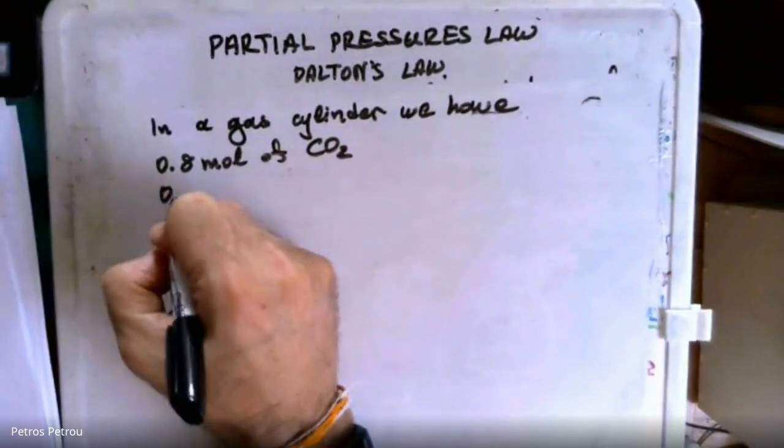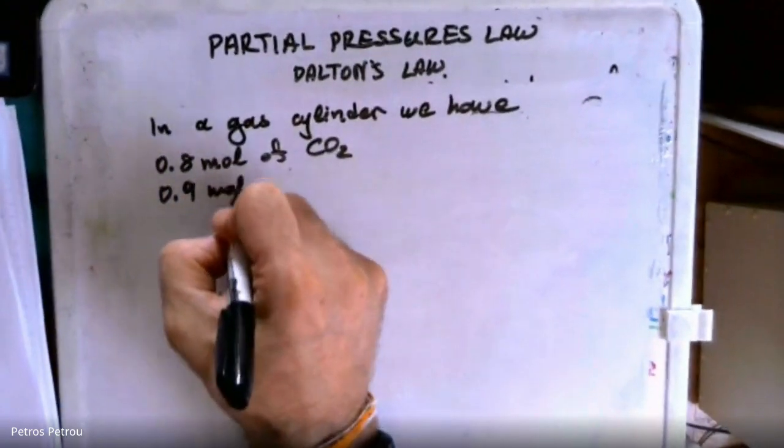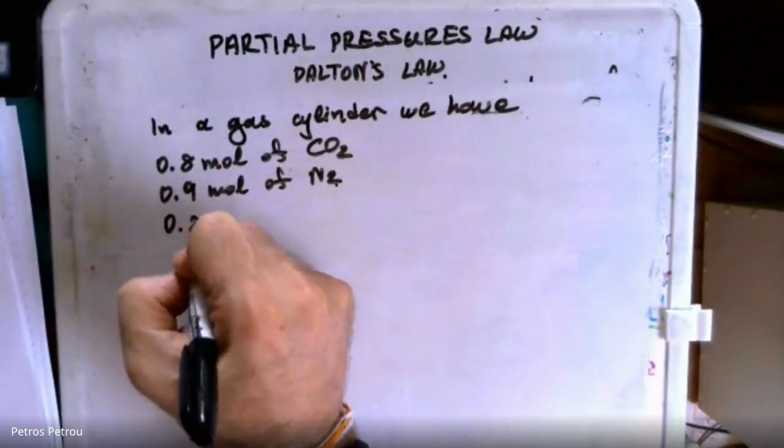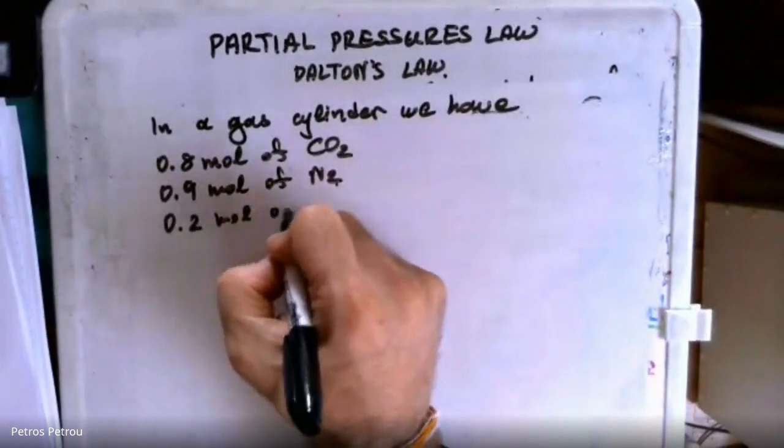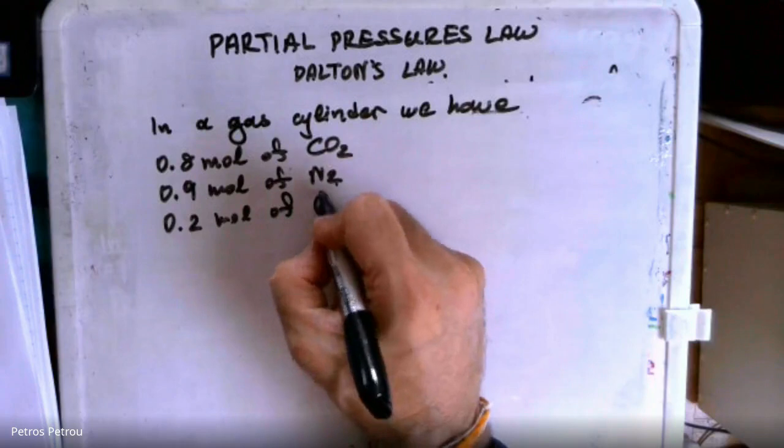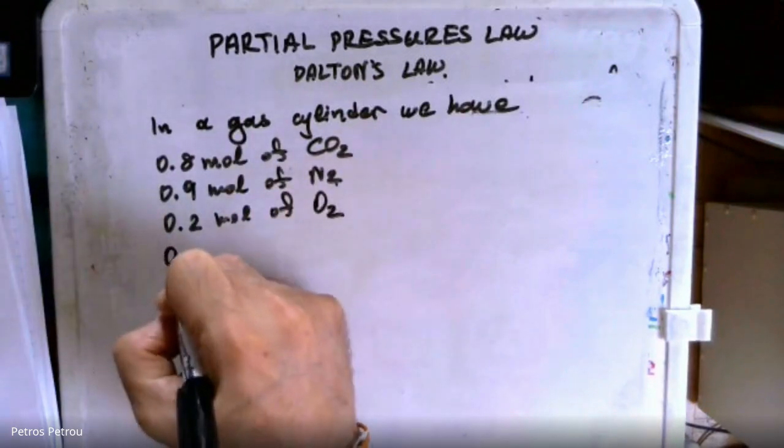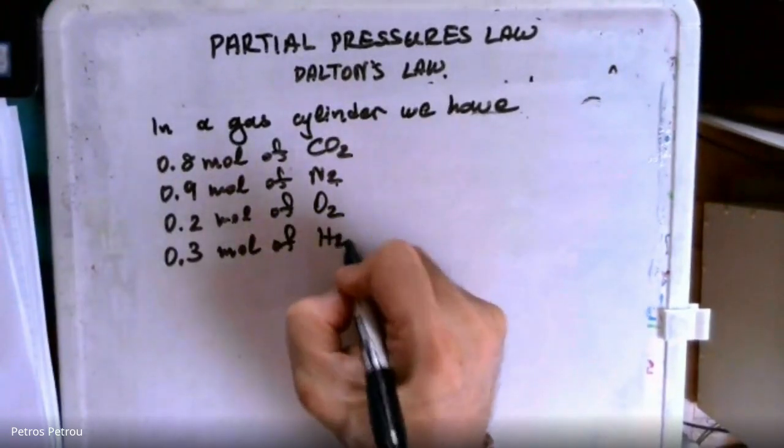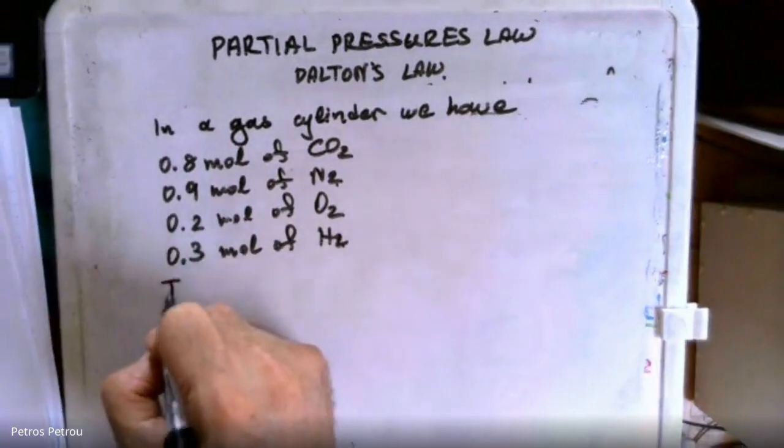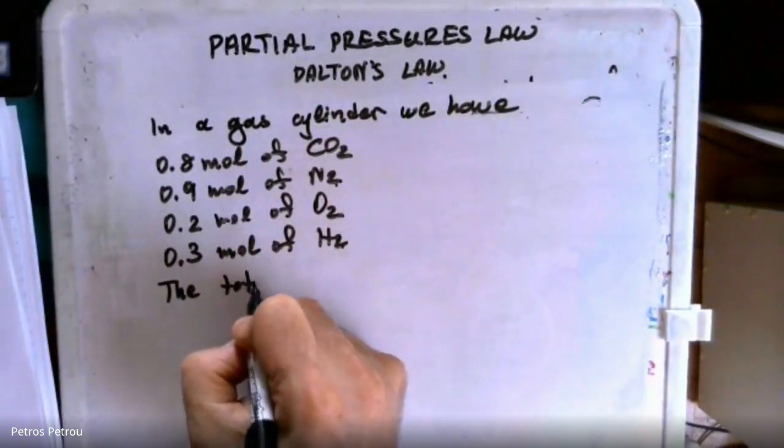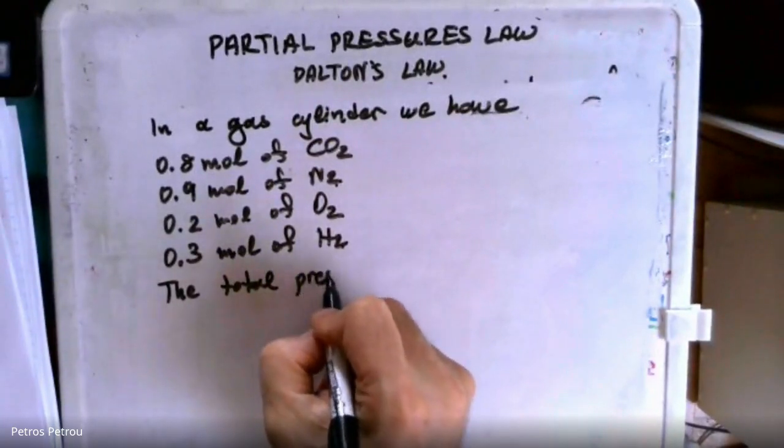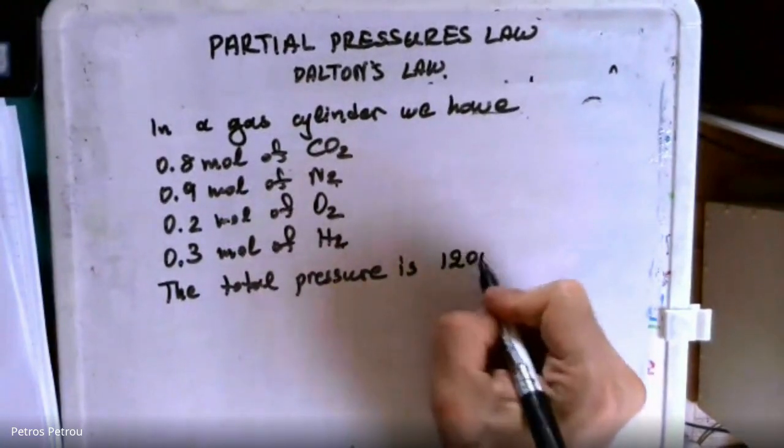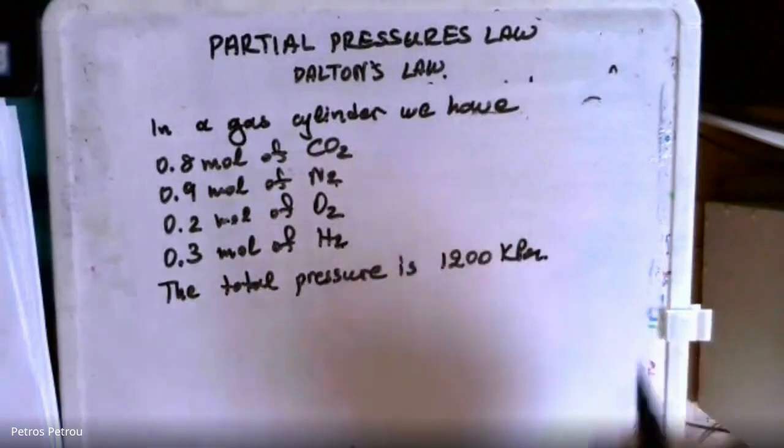0.9 moles of nitrogen, 0.2 moles of oxygen and 0.3 moles of hydrogen gas. The total pressure is 1,200 kilopascals. Pretty big one.